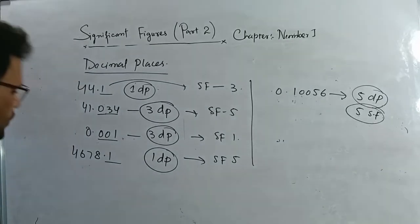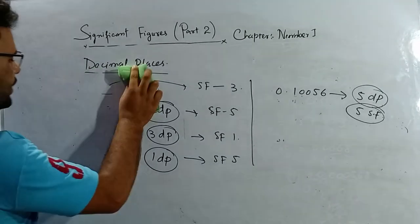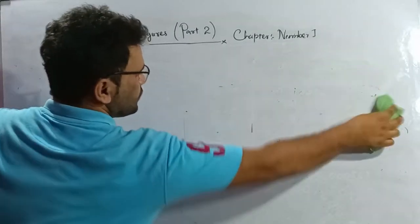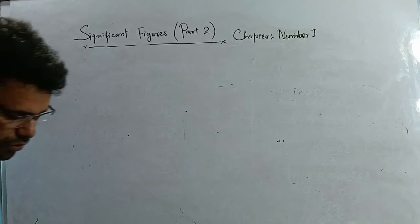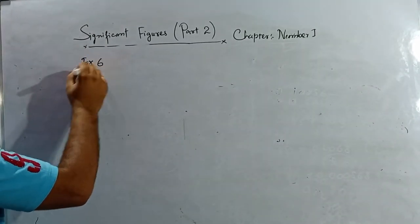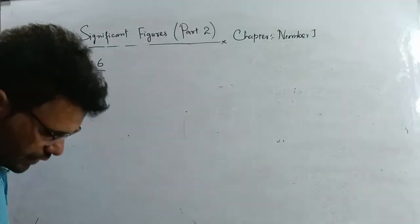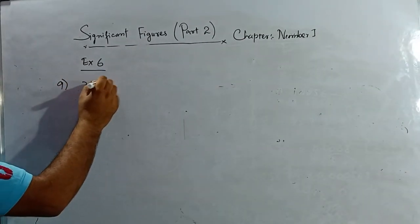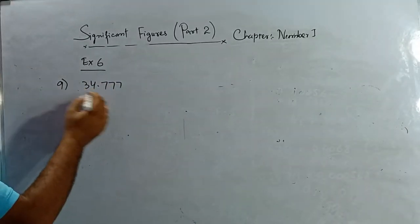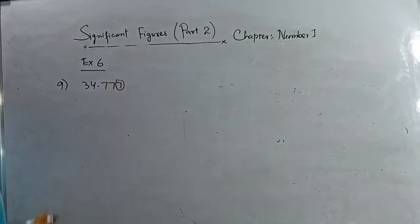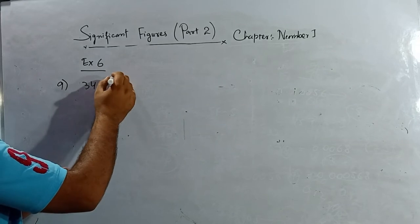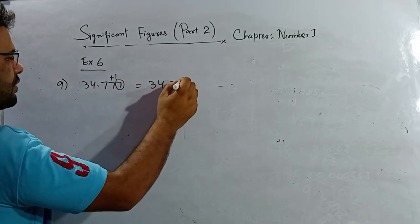Now coming to the question of how to write decimal places. Exercise 6, question number 9: 34.777, write this number corrected to two decimal places. I need to check the third decimal place — this is it. It is equal to or greater than five, so I add one. The answer is 34.78, two decimal places.